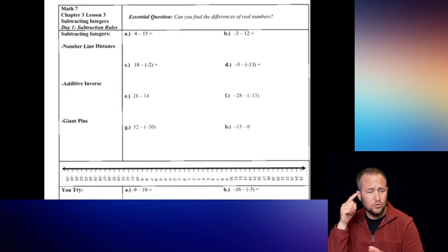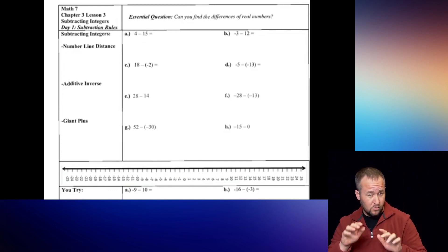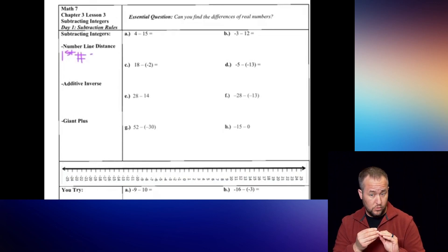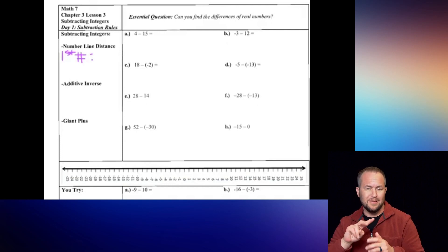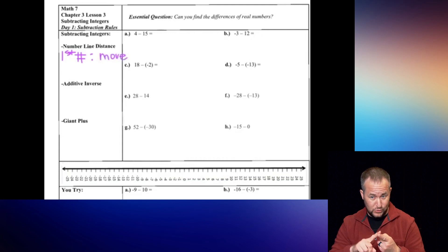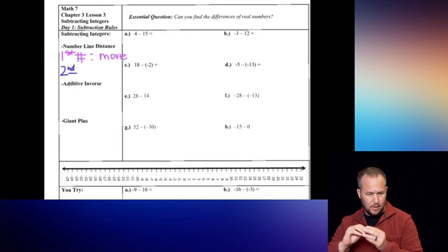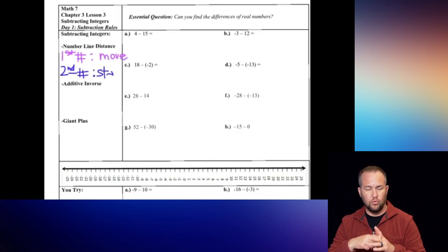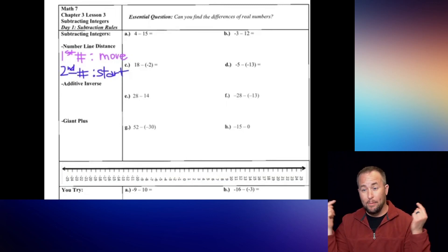For adding integers, we use the number line distance method. We're going to do something very similar, but this time the first number is where you move to and the second number is where you start. So second number is where you start. This looks kind of similar to addition, only backwards or opposite, which makes sense because the opposite of addition is subtraction.